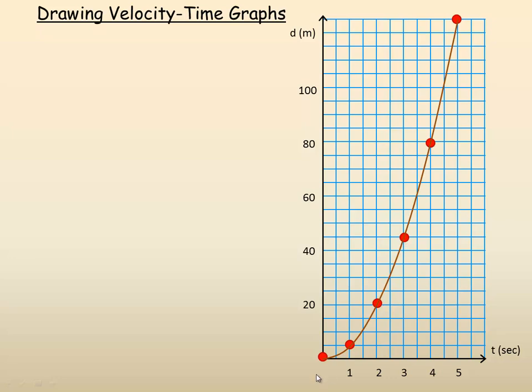So this is the displacement-time graph. In order to draw the velocity-time graph, velocity is the rate that displacement changes—it's the change in displacement over change in time. To calculate those rates, it's really a slope calculation.